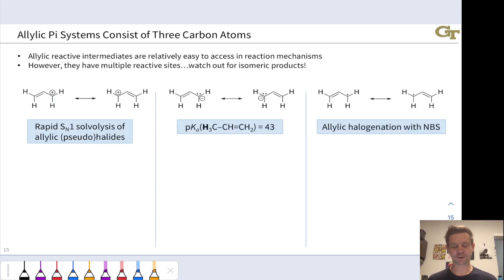The stability of allylic intermediates means that we can do all kinds of things at allylic positions and allylic functionality that we would be unable to do or would be much more difficult at just plain vanilla alkyl groups. The three examples on this slide highlight the allyl cation, allyl anion, and allyl radical in this context. In the first example, we have rapid SN1 solvolysis of allylic halides or pseudohalides.